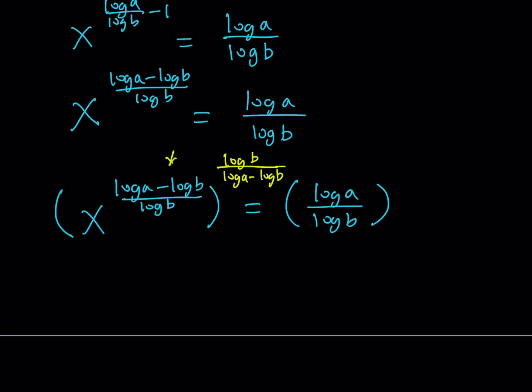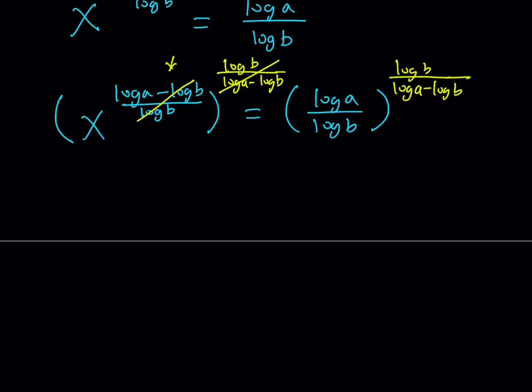Now, if I raise this and, of course, the right-hand side at the same time to the same power and that power is going to be the reciprocal of this expression here so that their product is going to be 1. So, I want to raise both sides to the power of log b over log a minus log b. And when I do, these are going to cancel out because their product is going to be 1. And, I'll be getting x from here. So, x equals log a over log b to the power log b over log a minus log b. That is the x value.